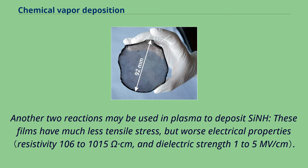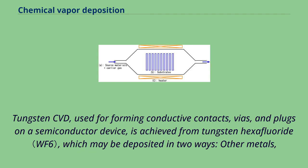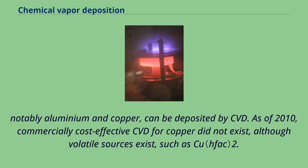Tungsten CVD, used for forming conductive contacts, vias, and plugs on a semiconductor device, is achieved from tungsten hexafluoride, which may be deposited in two ways. Notably, aluminum and copper can be deposited by CVD. As of 2010, commercially cost-effective CVD for copper did not exist, although volatile sources exist, such as Cu(hfac)2. Copper is typically deposited by electroplating.